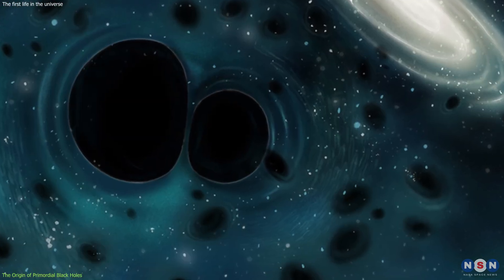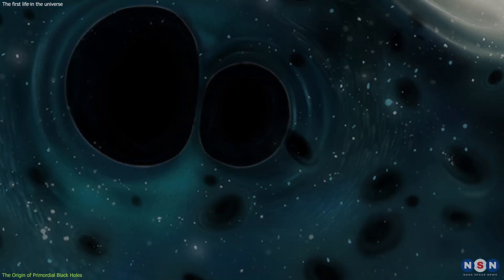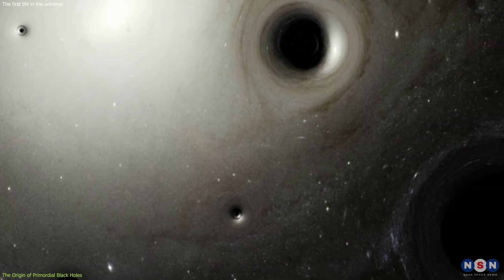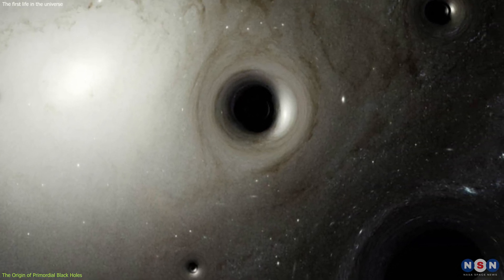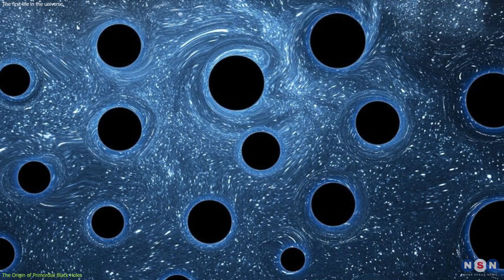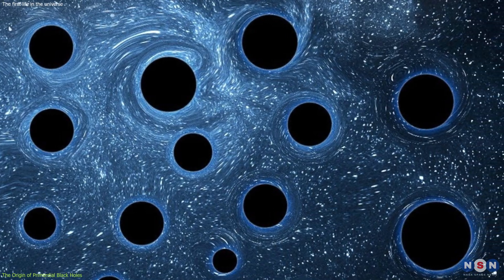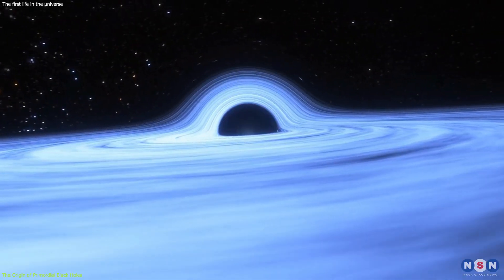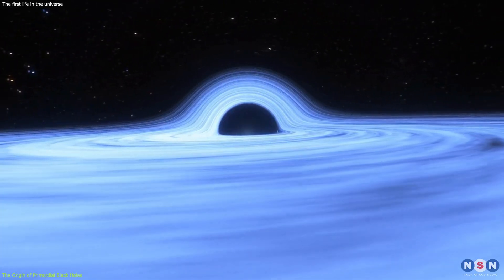These black holes could have a wide range of sizes, from as small as an atom to as large as a mountain, or even bigger. The existence of primordial black holes has not been confirmed by any observation or experiment, but there are some indirect clues that suggest they might be out there.